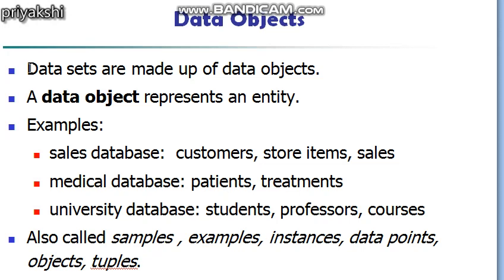For example, in a sales database, customers and store items can be entities — these are referred to as data objects. In a medical database, patients and doctors can be data objects. In a university database, students, professors, and courses are the data objects. In some books, data objects are also referred to as samples, instances, data points, objects, or tuples — these are all synonyms.